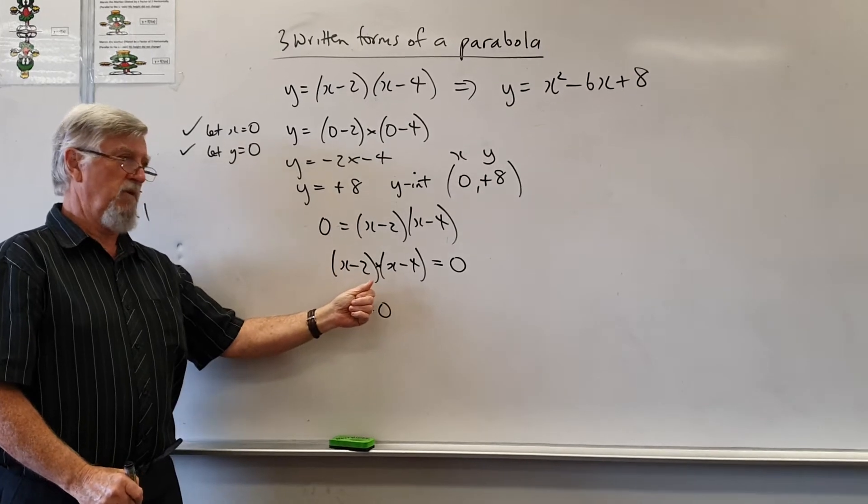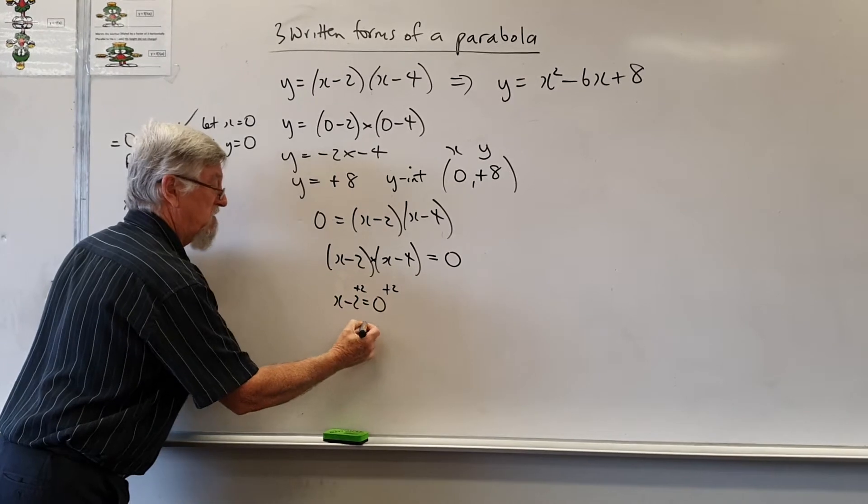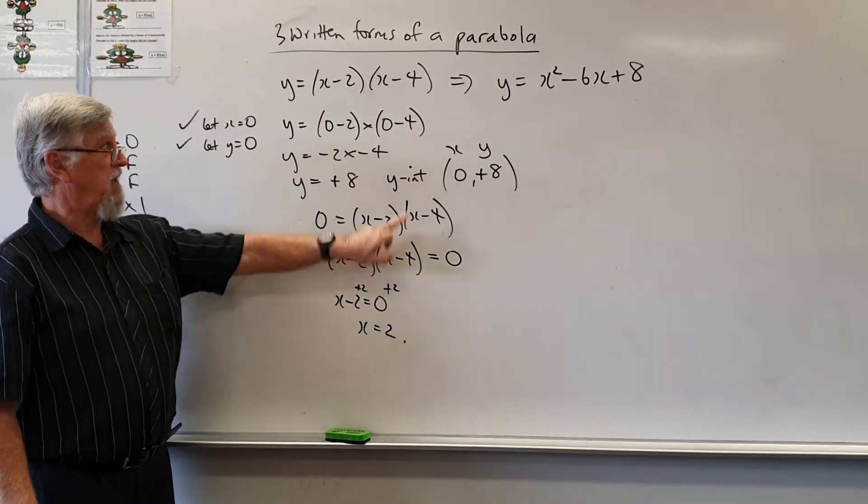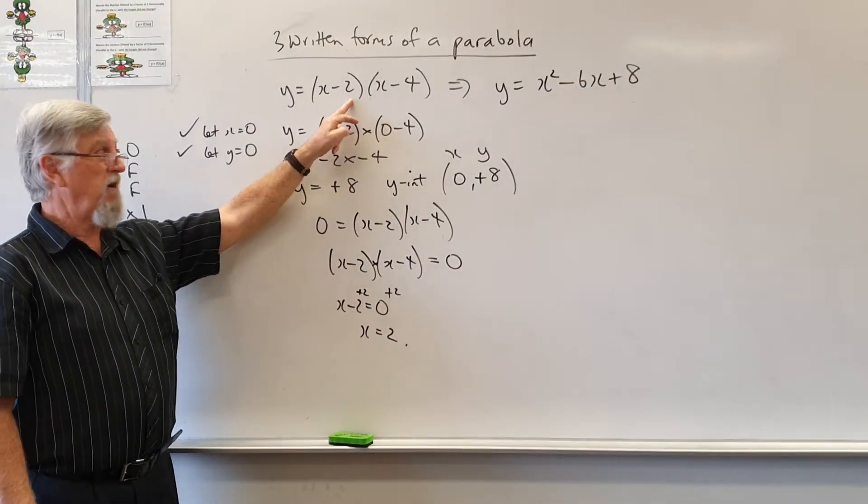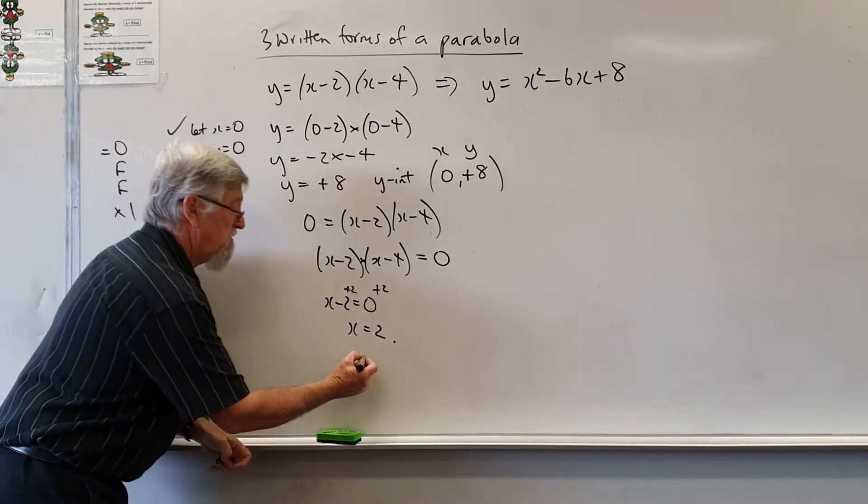You can actually get both of them be 0 but different story when we're multiplying. But on this if I add 2 to this side add 2 to this side. So if x equals 2 if I go back up to here 2 take 2 would be 0. 0 times something would still be 0. So I'd have 2, 0.